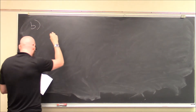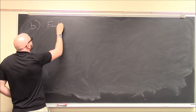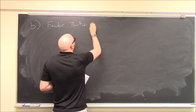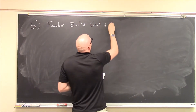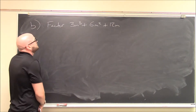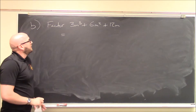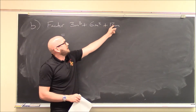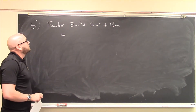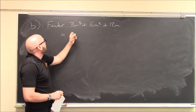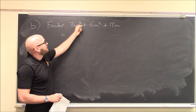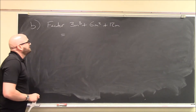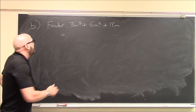Here's another example. Factor 3m cubed plus 6m squared plus 12m. What can I divide all of the terms by? Well, I can divide by 3 — but actually, they're also all divisible by m: m goes into m cubed, m squared, and m perfectly. So I can divide by more than 3; I can divide by 3m.